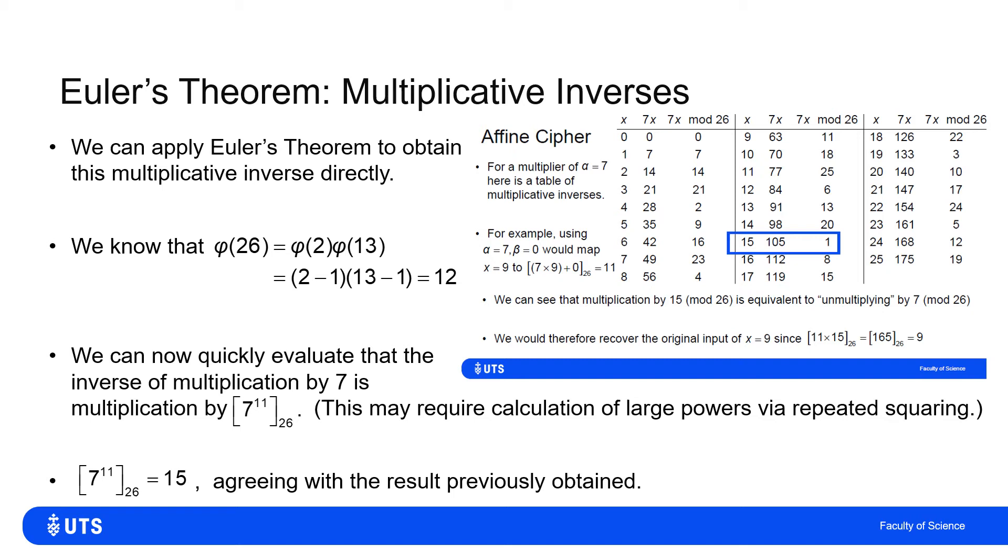Now that's not super tidy to figure out itself, we might need to use the methods for calculating large powers in modular arithmetic by repeated squaring. But 7 to the 11th mod 26 is 15, and that's exactly what I got from the table.